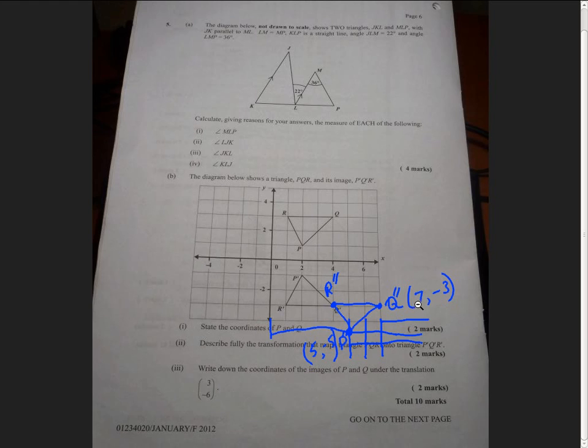And so these are the images of P and Q after the translation (3, -6). And that's it.